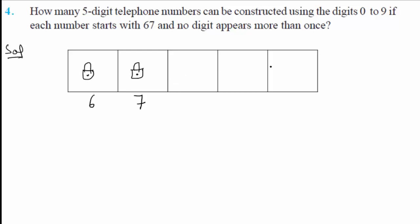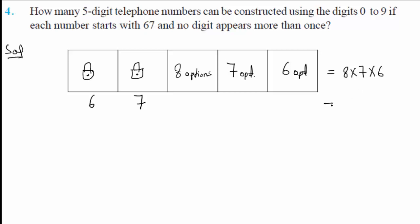Now you have only 3 positions left, and no digit appears more than once, meaning repetition is not allowed. Since 6 and 7 are already used, from 10 digits (0 to 9) we subtract 2, leaving 8 options for the first remaining position, 7 options for the next, and 6 options for the last.